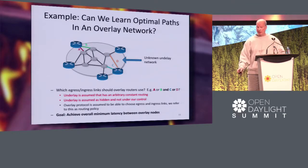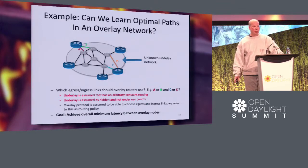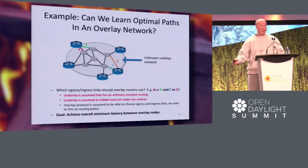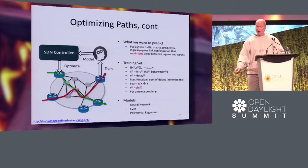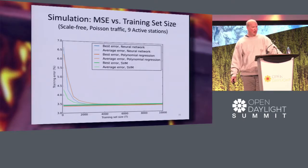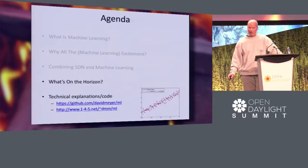Here's one example: I want to learn optimal paths in an overlay network where I don't own the underlay. The goal is to figure out the best paths in terms of minimum delay — should I go from A to C, or A to D, or what? The goal is to achieve minimum delay between overlay nodes. We actually did this experiment and it worked pretty well. The more examples you have, the better the error properties — more data leads to better learning.